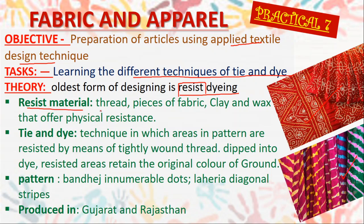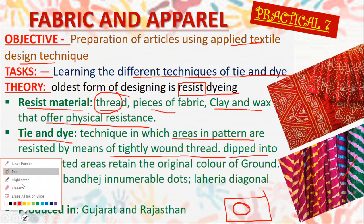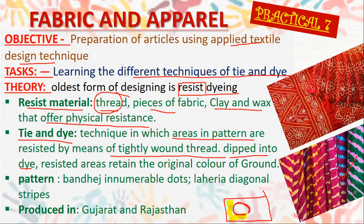This resist material can be thread, pieces of fabric, clay, or wax — anything that offers physical resistance to the dye. When we talk of tie and dye, it is a technique in which the areas in the pattern are resisted by means of tightly wound thread. After winding it, it is dipped into the dye. The resisted area retains the original color of the ground. For example, if I want to make a circle design, I tie it with thread. When I dip it in yellow color, the rest of the fabric becomes yellow, but the part which is tied remains white. This is the concept of tie and dye.